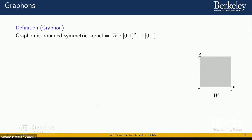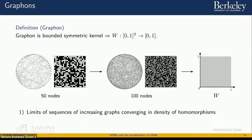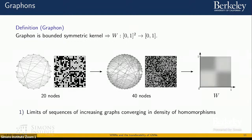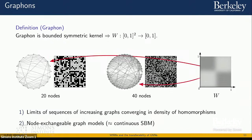This density of homomorphisms tells us the probability that neighborhoods of nodes look like a given motif, for different types of motifs. This is exactly how we get from graphs to graphons. The definition of a graphon is simply a bounded symmetric kernel — a continuous adjacency matrix — and these are limit objects of increasing graphs that converge in density of homomorphism. These limit objects impose a lot of structural properties on the graphs that come before.